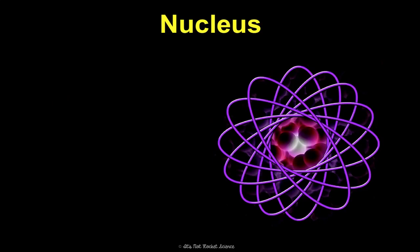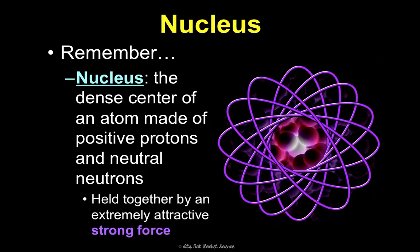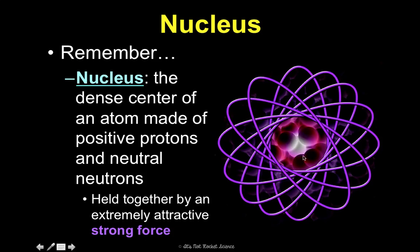Think back to our atomic structure unit and talking about the nucleus. That's the dense center of an atom, composed of positive protons and neutral neutrons, held together by an extremely strong force. The whole atom is attracted because of the negative electrons in the electron cloud and the positive protons in the nucleus. Like charges repel, so these positive protons don't want to be near each other, and yet they're held together — which means there's an insane amount of energy in the nucleus. That's what makes nuclear chemistry a science.